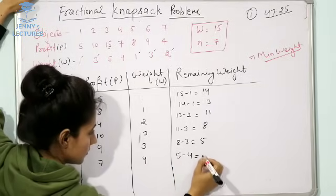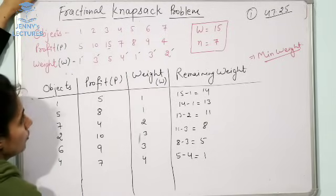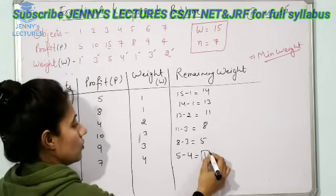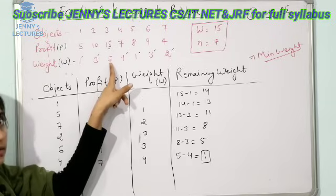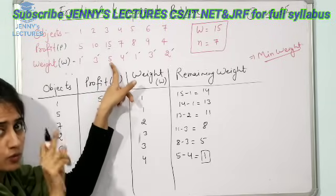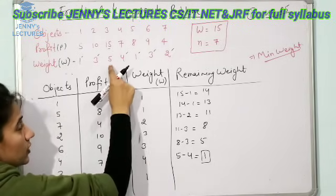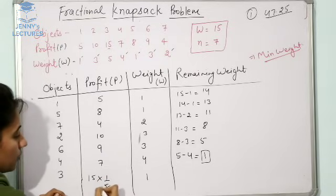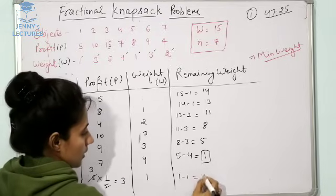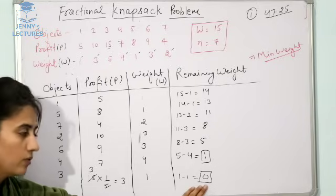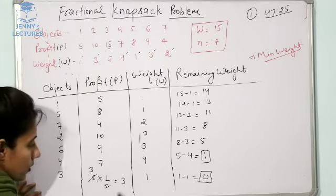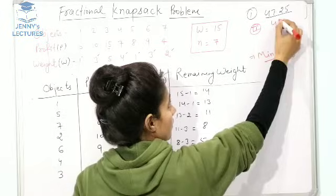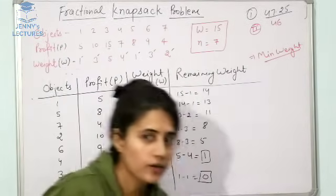Next minimum weight 4 — object 4, profit 7, weight 4. Remaining: 5 − 4 = 1. Next is weight 5 — object 3, profit 15, but remaining capacity is only 1. So we select only the fraction 1/5 of this object. Profit for 1 kg = 15 × (1/5) = 3. Remaining: 1 − 1 = 0. Total profit for the second approach: 46.